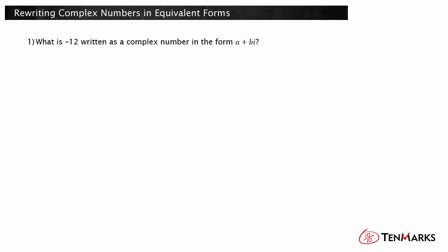Negative 12 is a real number, so it is the a in a complex number in the form a plus bi. Because there is no imaginary component, the value of b must be 0. So, negative 12 written in the form a plus bi is negative 12 plus 0i.